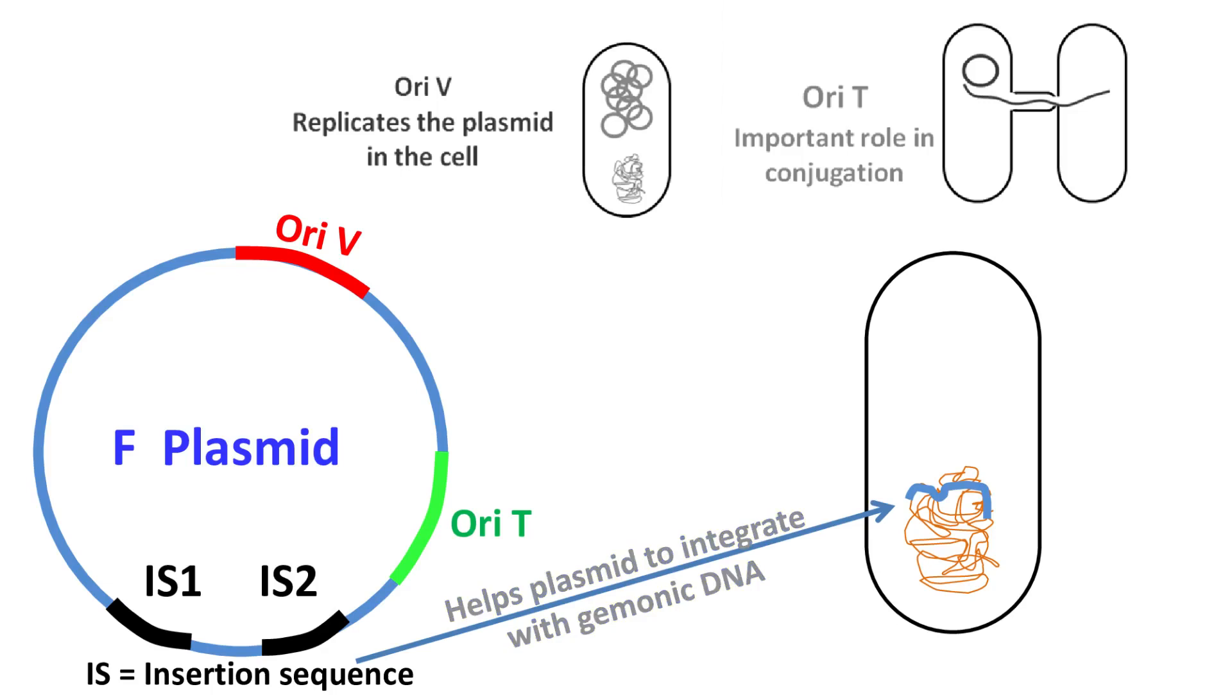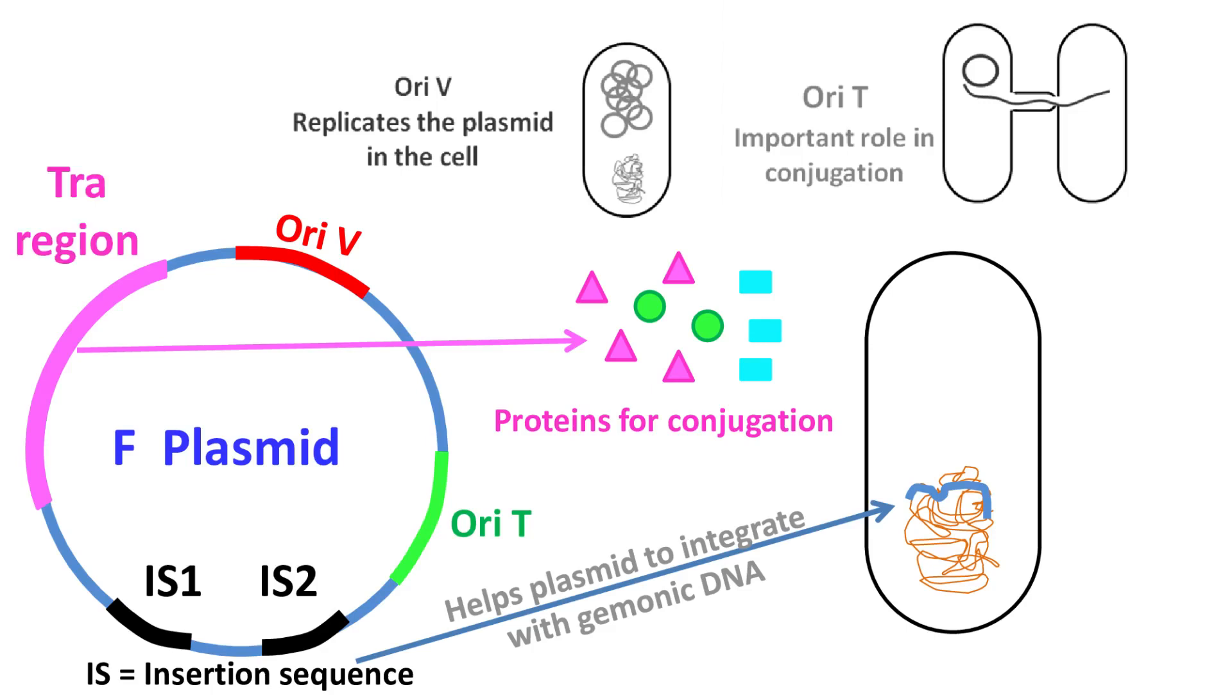A large portion of F-plasmid is dedicated for making proteins involved in conjugation and transfer of DNA from the donor to the recipient cell. This region is known as the tra-region.